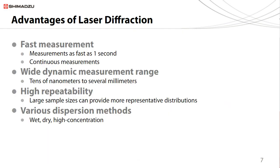Laser diffraction has several advantages over other sizing methods. First, it's extremely fast — Shimadzu instruments can take measurements as fast as one second. This also allows continuous measurements of a particle size distribution if it were to change over time due to different conditions. You can also measure an extremely wide dynamic range from tens of nanometers to several millimeters. It shows high repeatability, and you can potentially sample very large sample sizes, which provide more representative distributions.